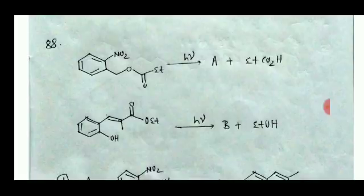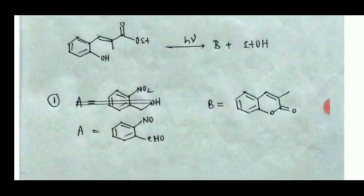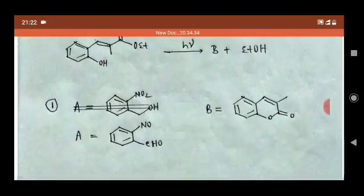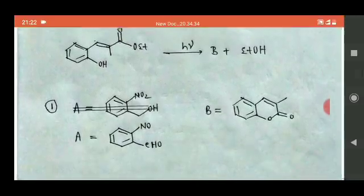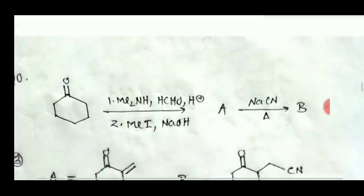The next reaction is the photo-deprotection reaction — deprotection of groups by photolysis. In option A, the nitro group is converted to a nitroso group and the other group becomes an aldehyde, and there is also a cyclized product. Option 1 is the correct answer for question number 88.